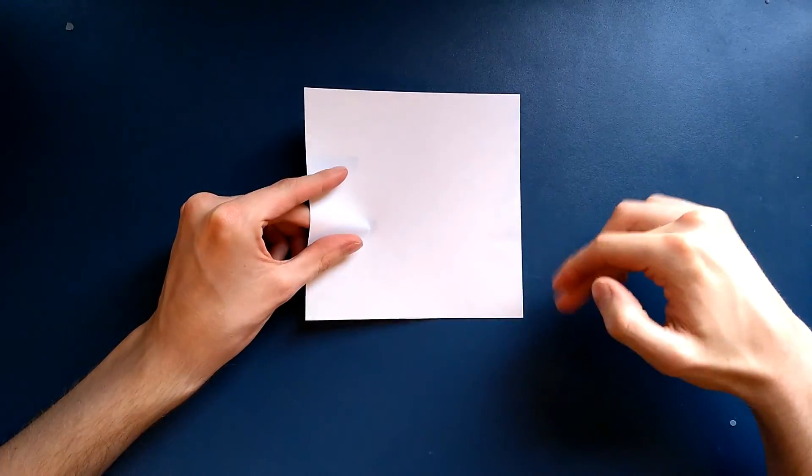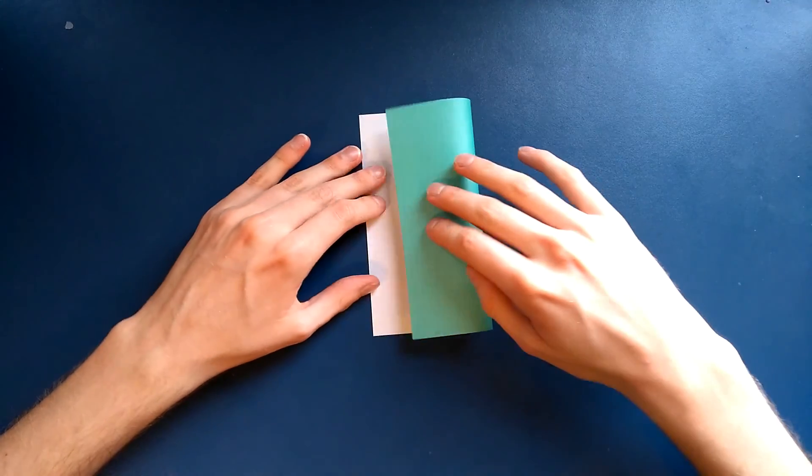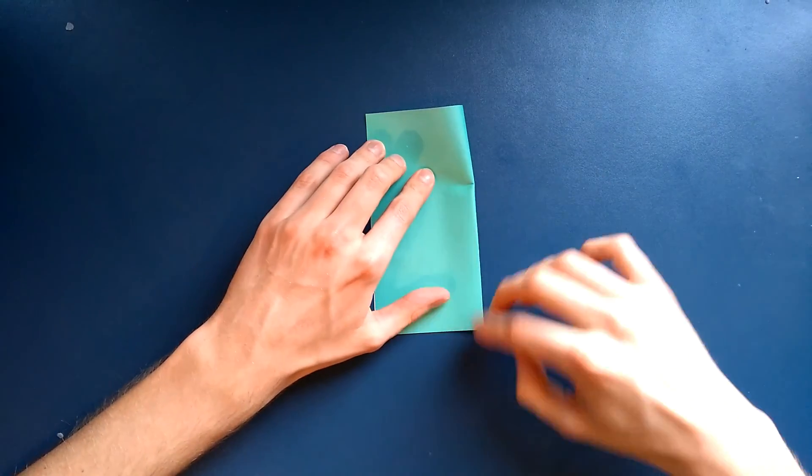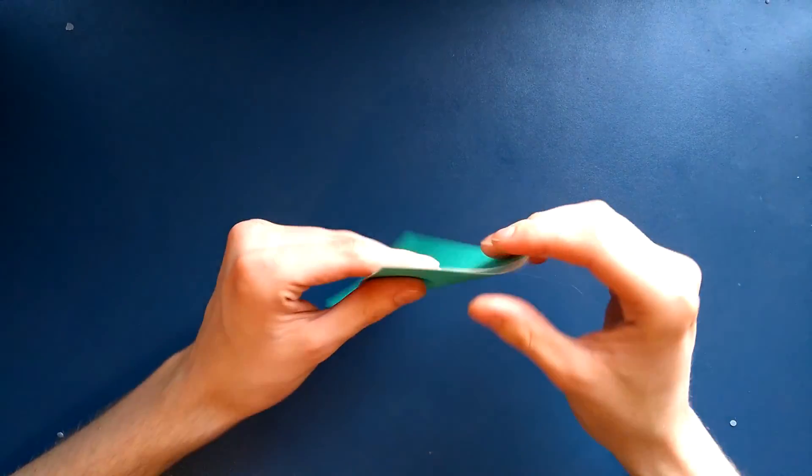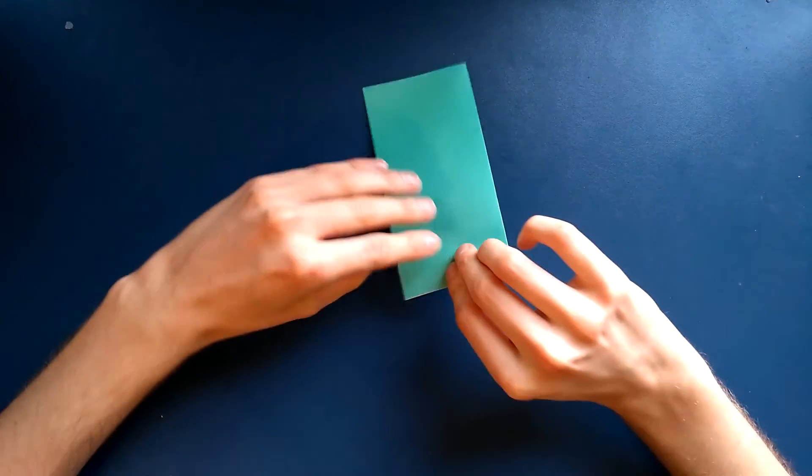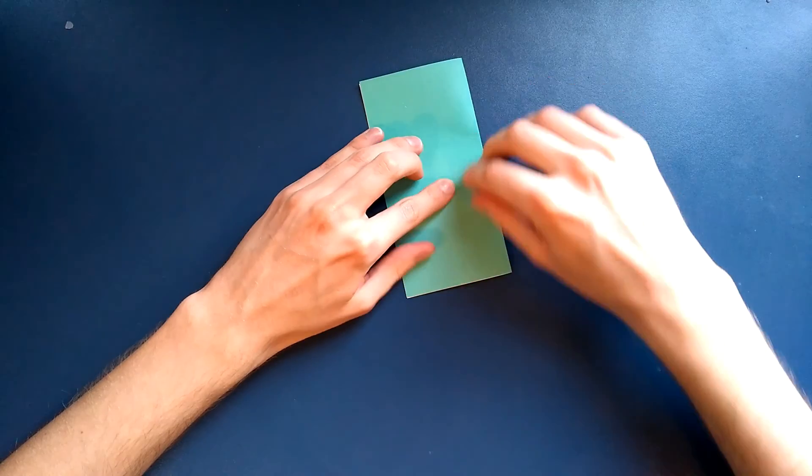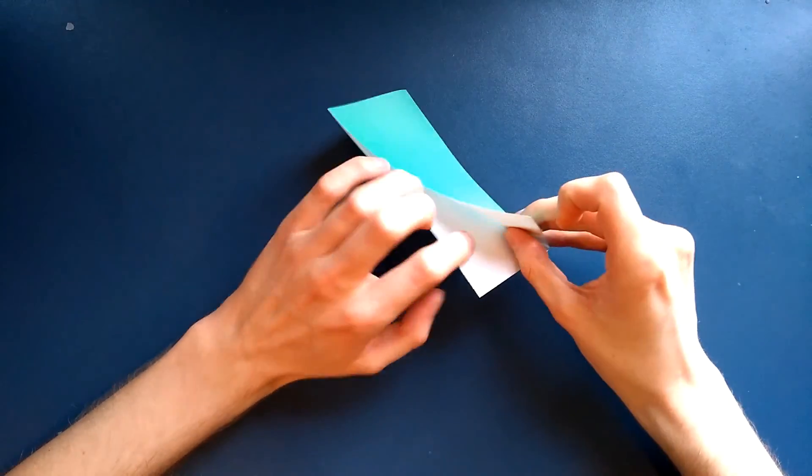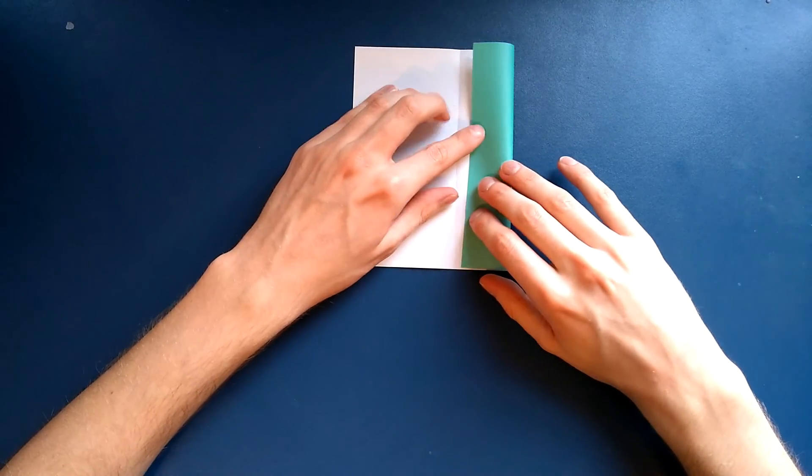Folding it in half, just want to make sure it's exact. There we go. And then opening it up and folding the edges into the center line.